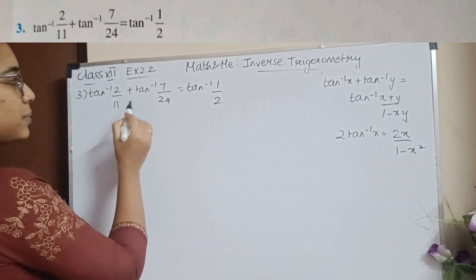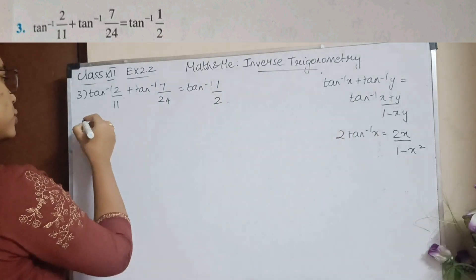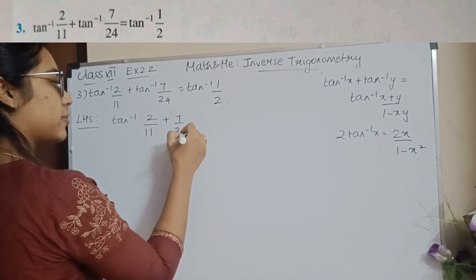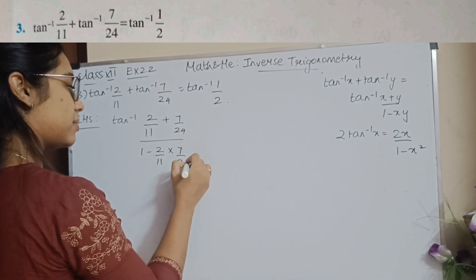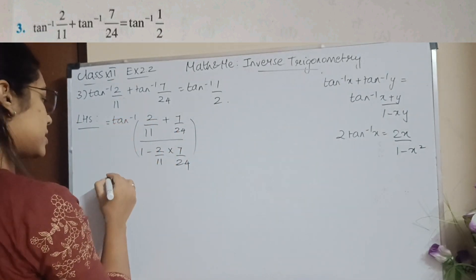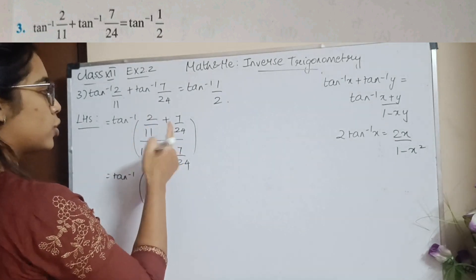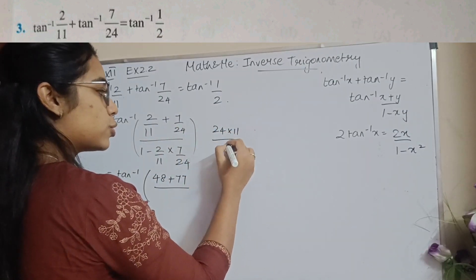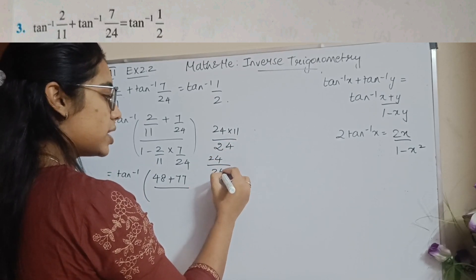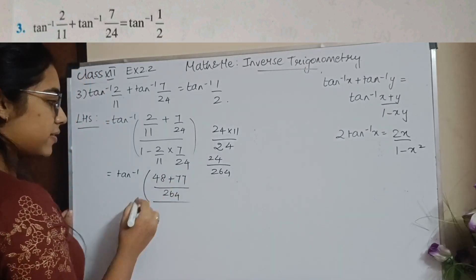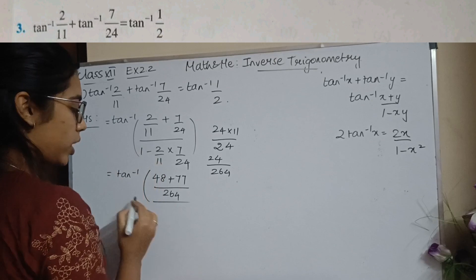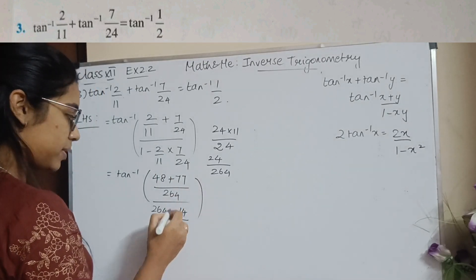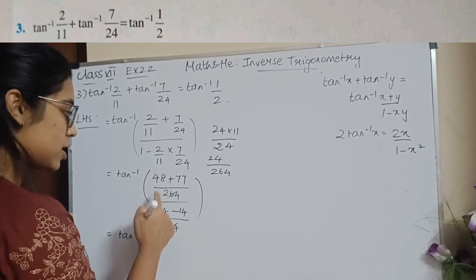Question 3: tan⁻¹(2/11) + tan⁻¹(7/24). We simply use the addition formula. LHS = tan⁻¹[(2/11 + 7/24) / (1 - (2/11)(7/24))]. Taking the LCM in the numerator: 2×24 = 48 and 7×11 = 77, giving 48 + 77 over 264. In the denominator: 264 - 14 over 264. The denominators cancel.